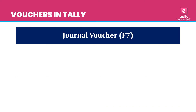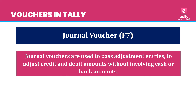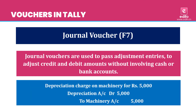The next voucher is Journal Voucher, with shortcut F7. Journal vouchers are used to pass adjustment entries to adjust credit and debit amounts without involving cash or bank accounts. Using journal voucher, you can pass all the entries which do not involve cash or bank account. For example, depreciation charged on machinery for Rs. 5,000 — in this transaction, there is no involvement of cash or bank account, so you pass this adjusting entry using journal voucher. The journal entry is: depreciation account debit 5,000 to machinery account 5,000.